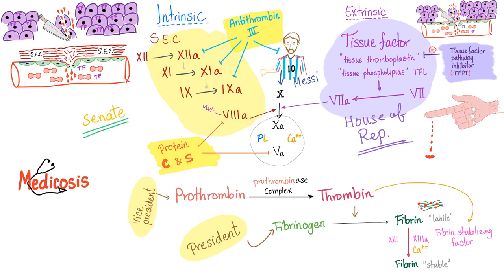Here are the checks and balances. You have antithrombin 3, which is anti-thrombin and is also anti-factors 9, 10, 11, 12, and 7. Tissue factor pathway inhibitor inhibits the extrinsic pathway — factor 3 and factor 7. Protein C and protein S inactivate factor V and factor VIII. C and S are anti-5 and anti-8.